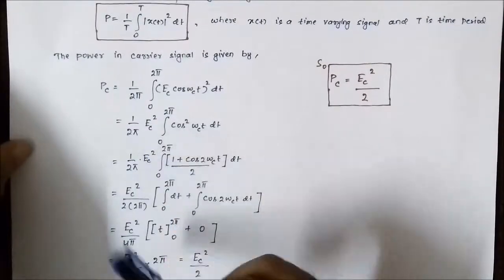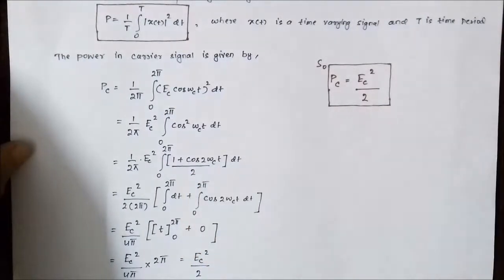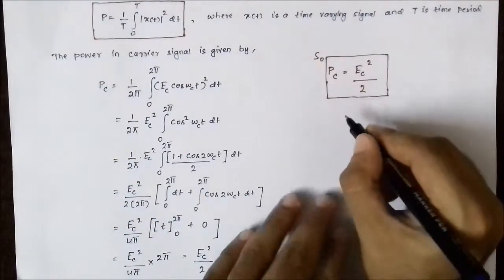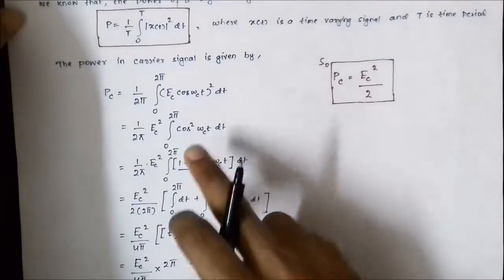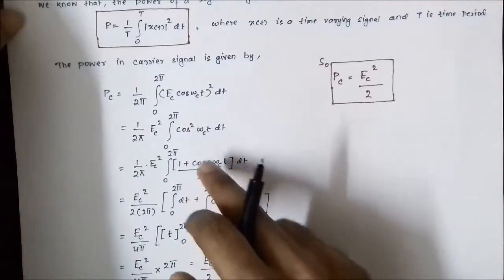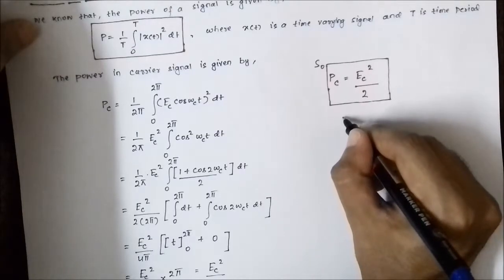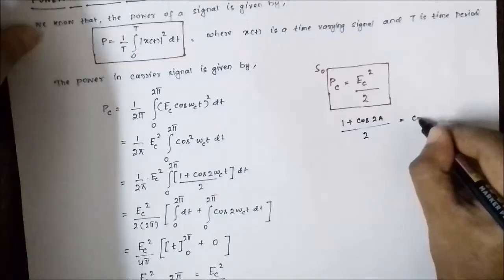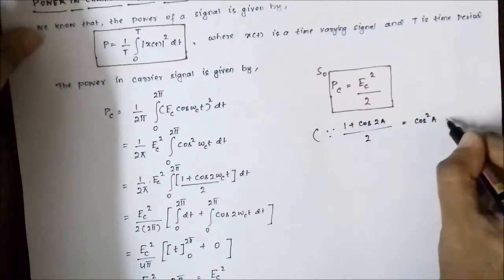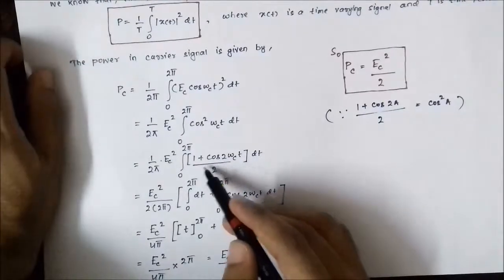Ec² comes outside as it is a constant, then we substitute cos²(ωc·t) with (1 + cos(2ωc·t))/2. The identity used here is that cos²(a) = (1 + cos(2a))/2. This identity is applied, and we separate the integral into two parts — one involving dt and one involving cos(2ωc·t).